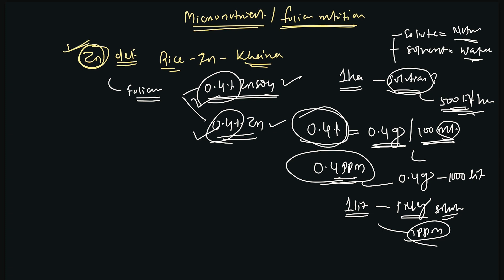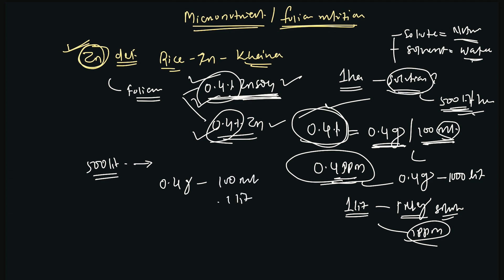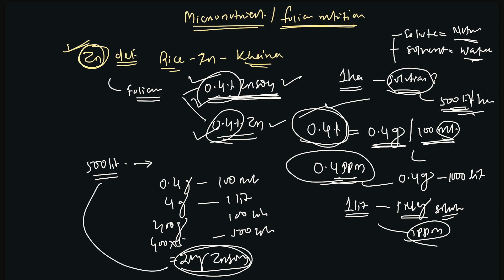The question is: prepare 0.4% zinc sulfate solution. What you need to do is take 500 liters of water. How much zinc sulfate is required to mix with 500 liters of water to prepare 0.4% solution? From the definition: 0.4 grams in 100 mL. So in 1 liter, 4 grams; in 100 liters, 400 grams; in 500 liters, 400 × 5 = 2 kg zinc sulfate. So 2 kg zinc sulfate should be added to 500 liters of water.